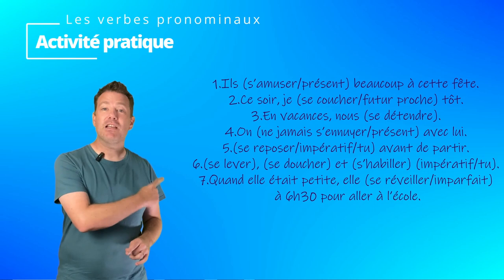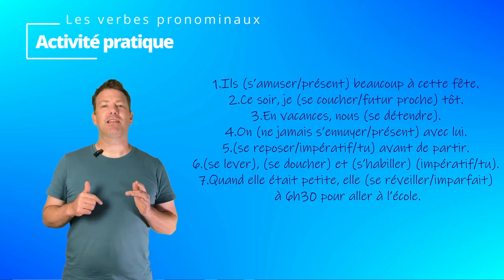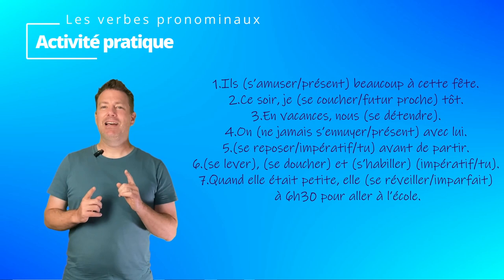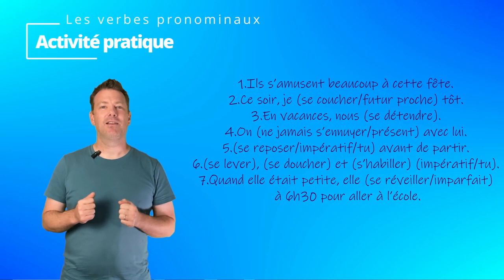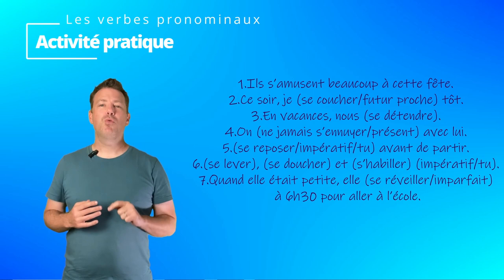Let's do an activity to revise and practice. All you need to do is conjugate the reflexive verbs in brackets at the given tense. Numéro 1: il, pluriel — s'amuser in the present tense — beaucoup à cette fête. Answer: ils s'amusent — it's s'apostrophe, and you add ent at the end. Ils s'amusent beaucoup à cette fête.